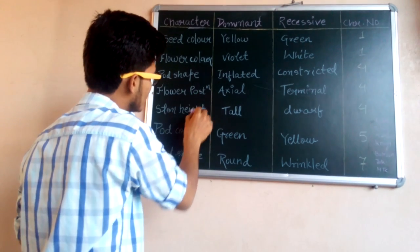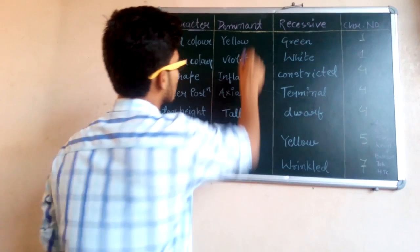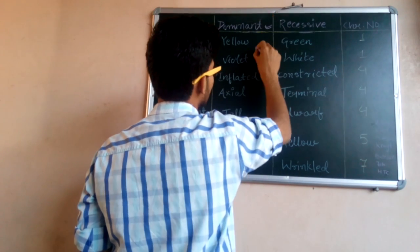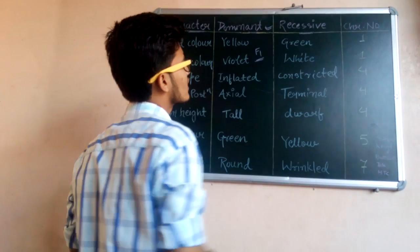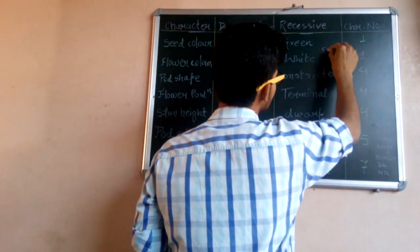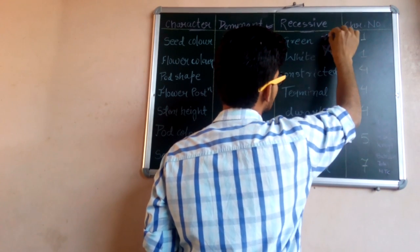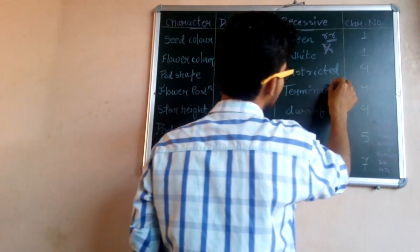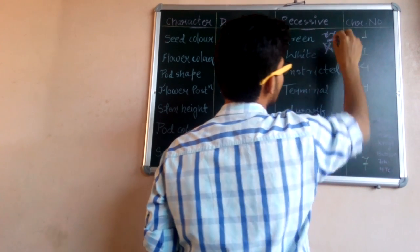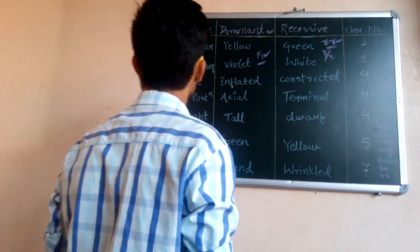Mendel chose seven characters to do experiments on, and all these seven characters have two kinds of traits: one is the dominant trait and another is the recessive trait. The dominant trait is one which is expressed in F1 generation even in the presence of the other allele. In F1 generation, the recessive trait cannot express itself unless it is present in homozygous form — if both alleles of a particular gene are homozygous recessive, then only it will express itself.